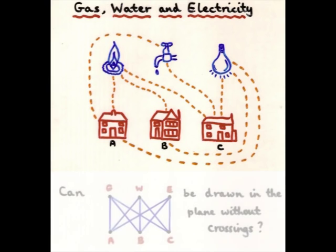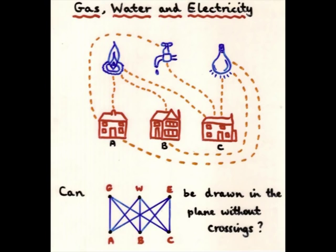Now, in terms of graph theory, what we're asking is, you've got the three utilities, you've got the three neighbours, and they're all joined up. Can I draw this in the plane without crossings? Can I unscramble it so we don't get any crossings?